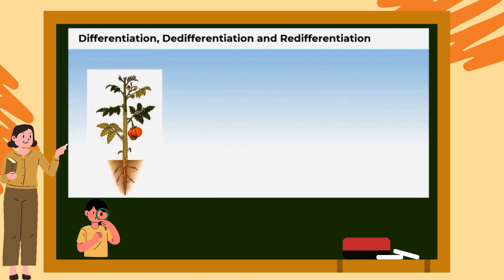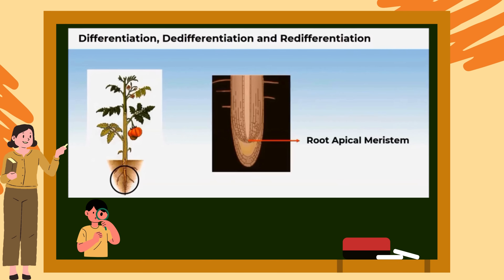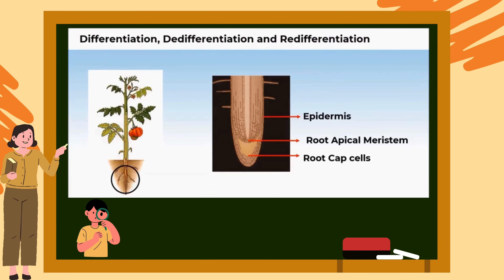The actual structure depends on the location of the cells. For example, the root apical meristem forms root cap cells, also called parenchyma, as well as epidermis. We say that the differentiation of plants is always open-type and it depends on the cell's position.